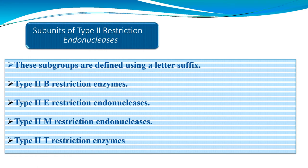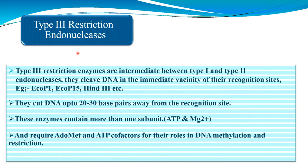Type 3 restriction enzymes are intermediate between Type 1 and Type 2 endonucleases. They cleave DNA in the immediate vicinity of the recognition site — up to 20 to 30 base pairs away. Examples include EcoP1, EcoP15, and HinP3. These enzymes contain more than one subunit and require ATP and magnesium chloride as cofactors.